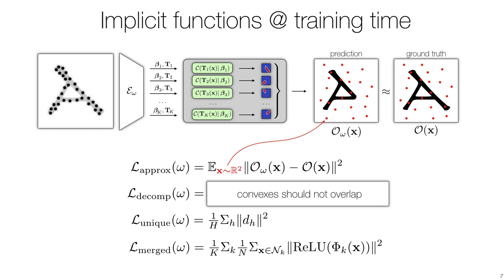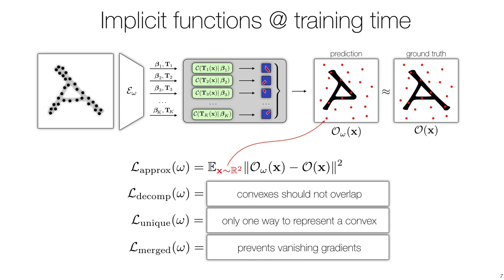We also employ auxiliary losses to help convergence by encouraging convexes not to overlap, removing null space in the convex parameterization, and ensuring that gradients do not vanish.